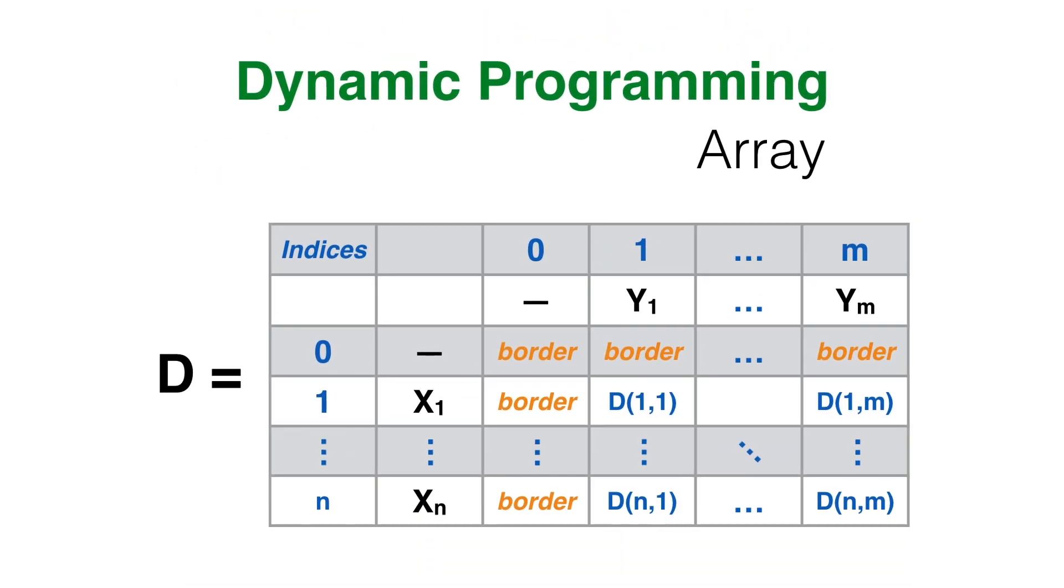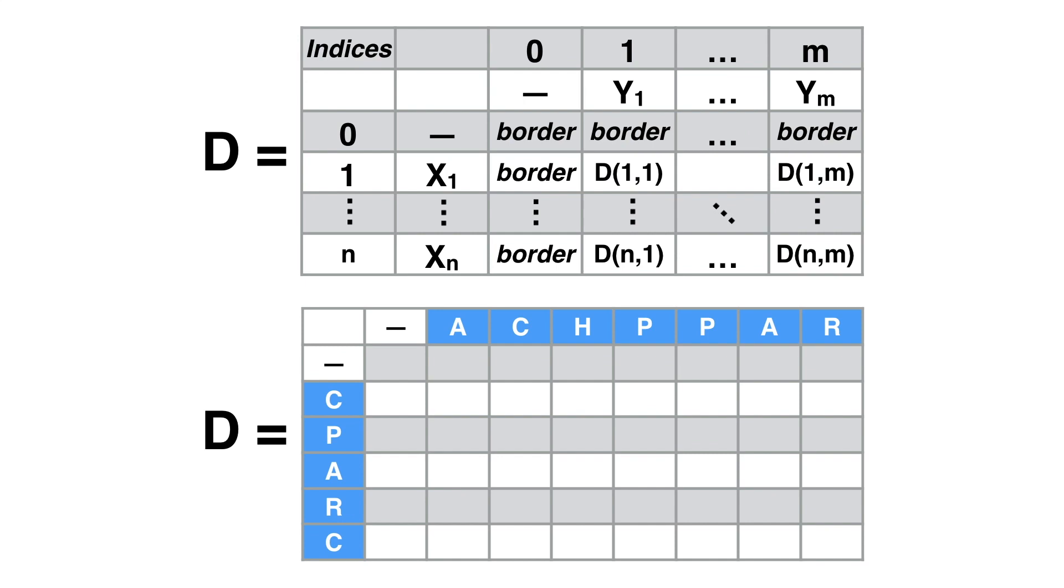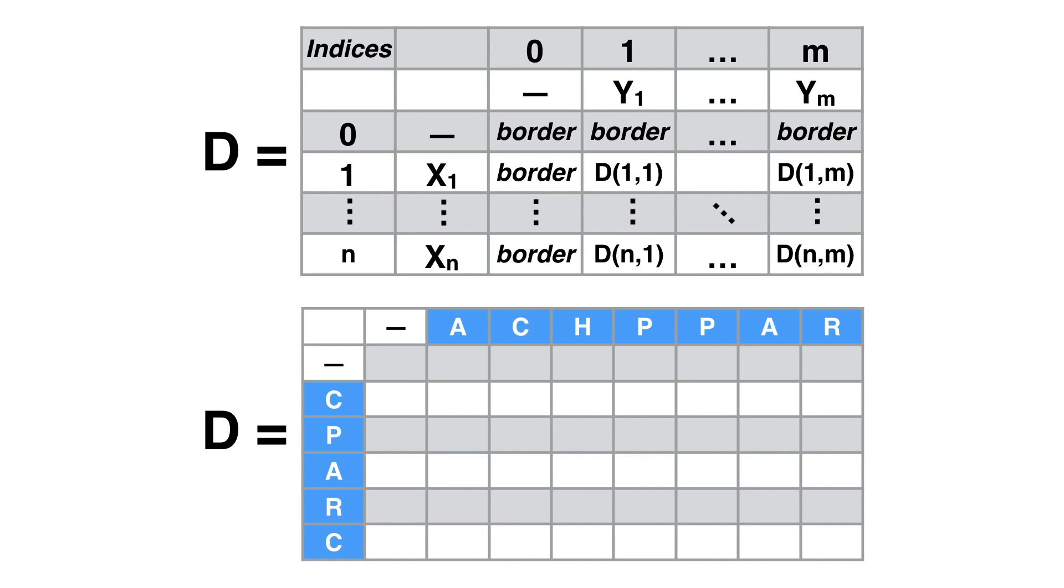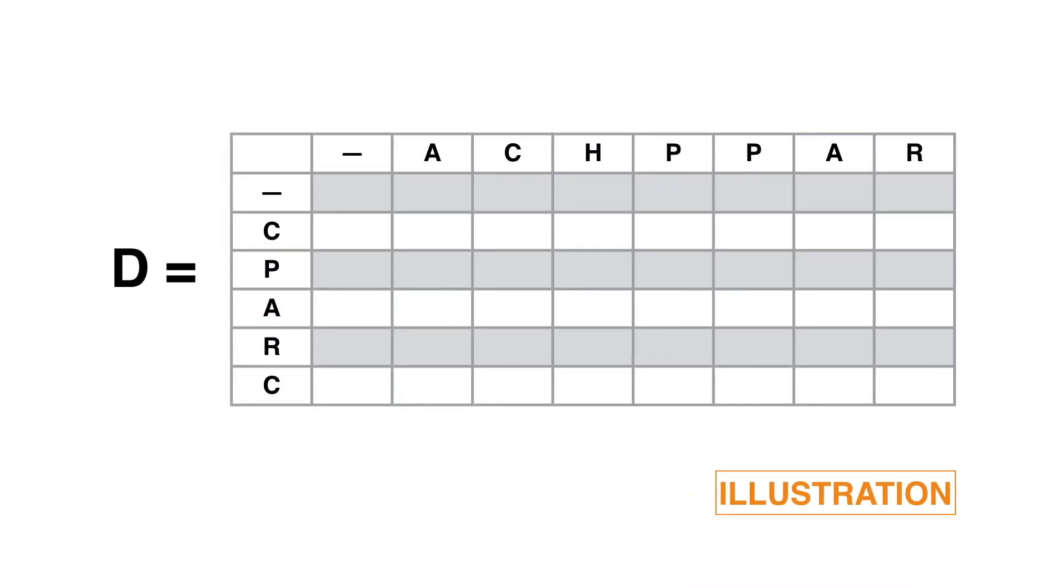The results of each computation are stored in an N times M array of general form. The array has some border information that is placed in row and column 0. The rest of the entries are indexed with the indices of the characters in X and Y. Here is the dynamic programming array for the pair of sequences X equals CPARC and Y equals ACHPPAR. We have dropped the indices as they are easily derived from the positions of the characters in the sequences.